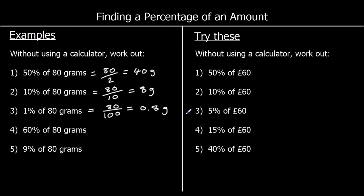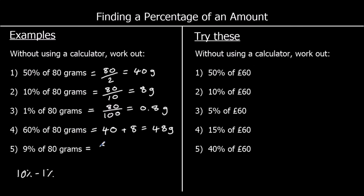Question 4 is asking us for 60%. We've already worked out 50% and 10%, so we can get 60% by adding 50% and 10% together. So 40 (which is 50%) plus 8 (which is 10%) gives us 48. And question 5, 9%: we've worked out 10% and 1%, so to find 9% we do 10% take away 1%, which is 8 take away 0.8, which is 7.2. So 9% of 80 grams is 7.2 grams.